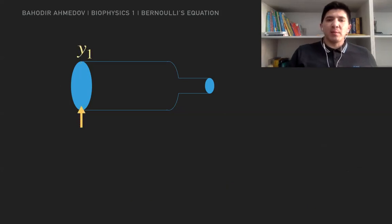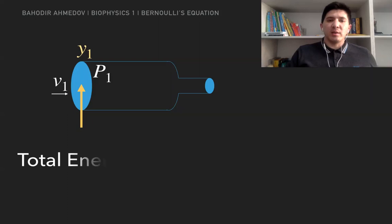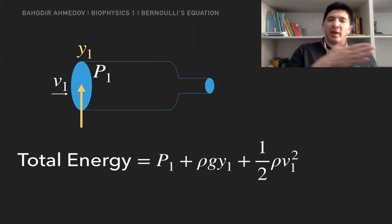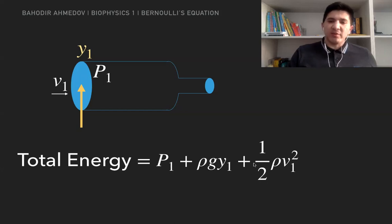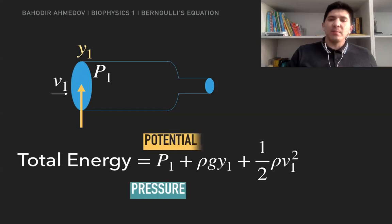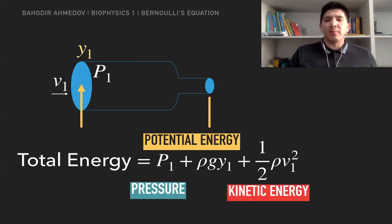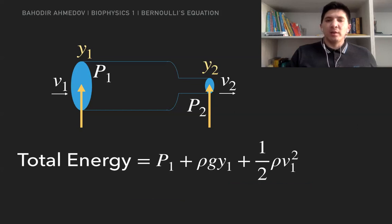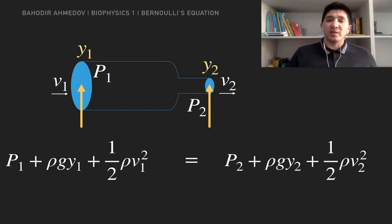So if I've got a pipe where the velocity, height, and pressure are different in the beginning than at the end, then the total energy is going to be the same. The total energy of the fluid in the beginning of the pipe depends on velocity V1, height y1, and pressure P1. This is going to be the same at the end of the pipe — with height y2, velocity V2, and pressure P2. This is Bernoulli's equation, which basically tells us that total energy is conserved.